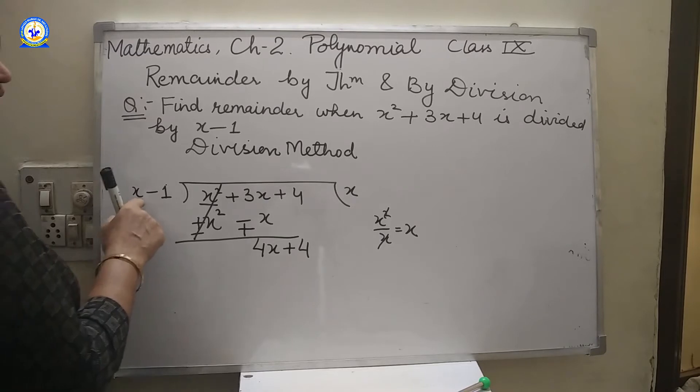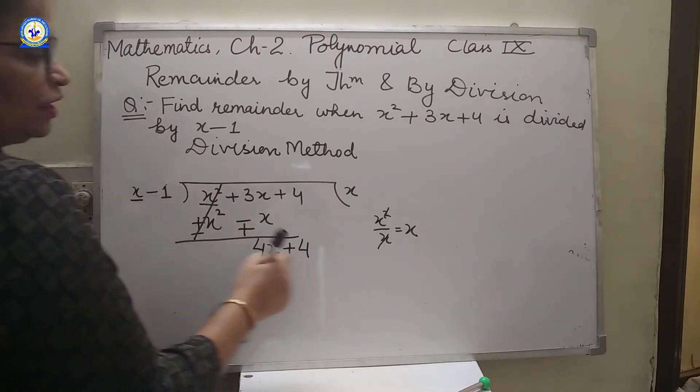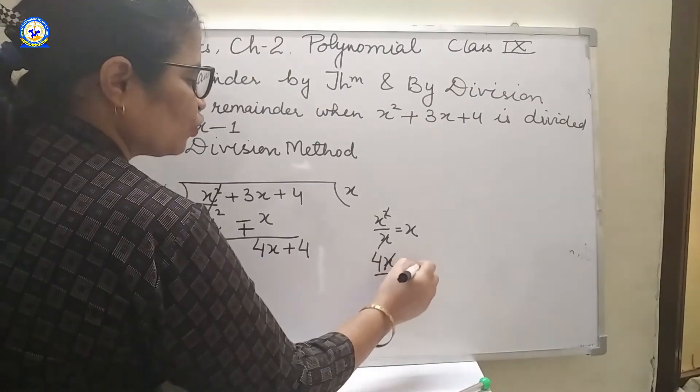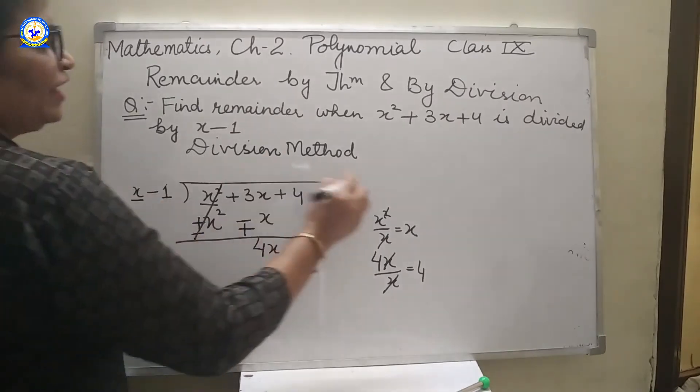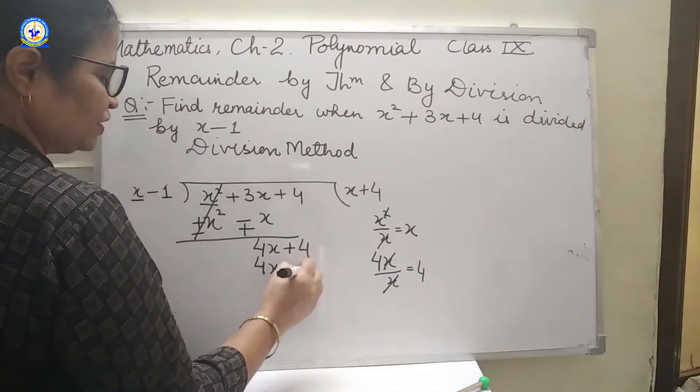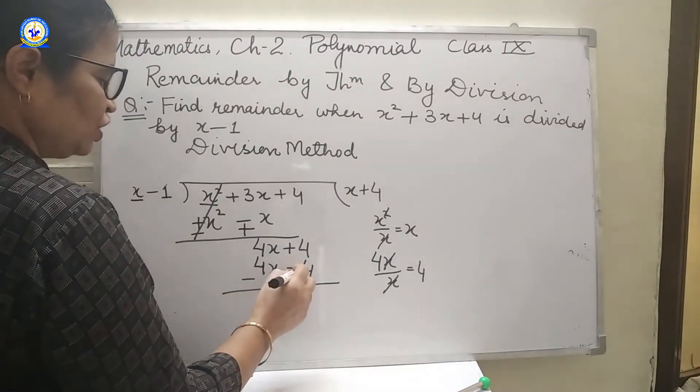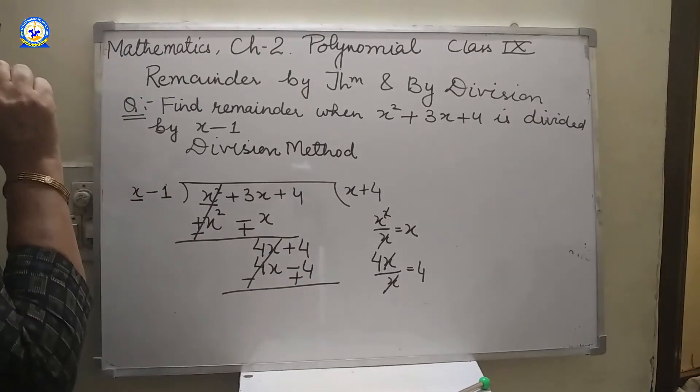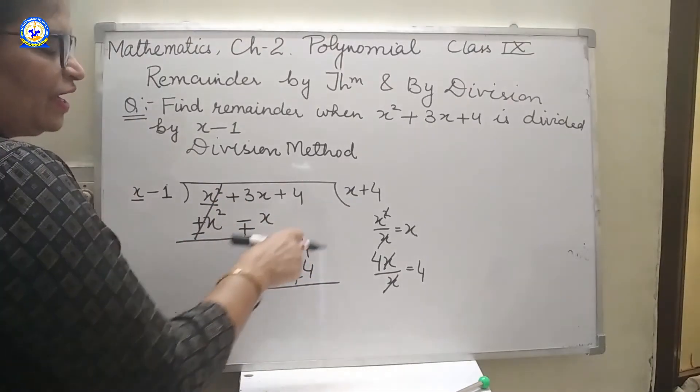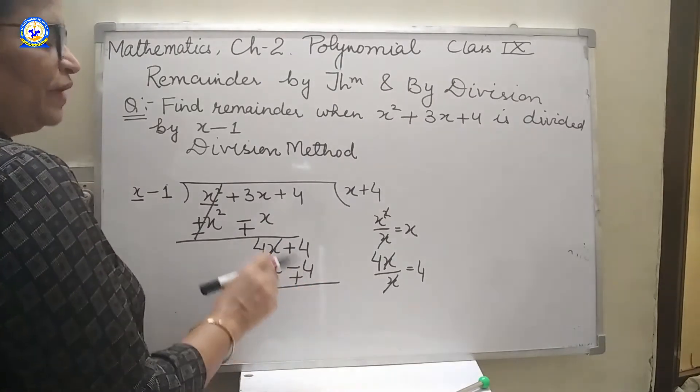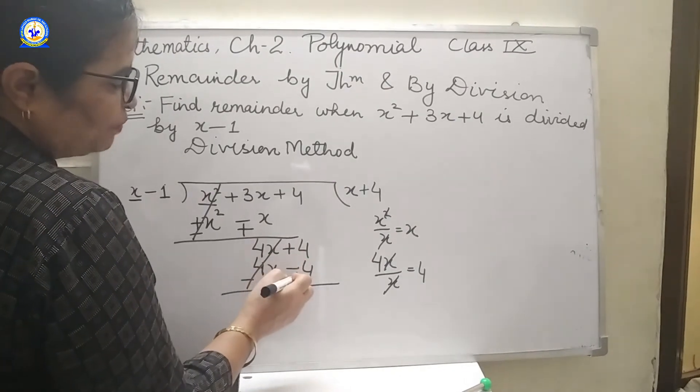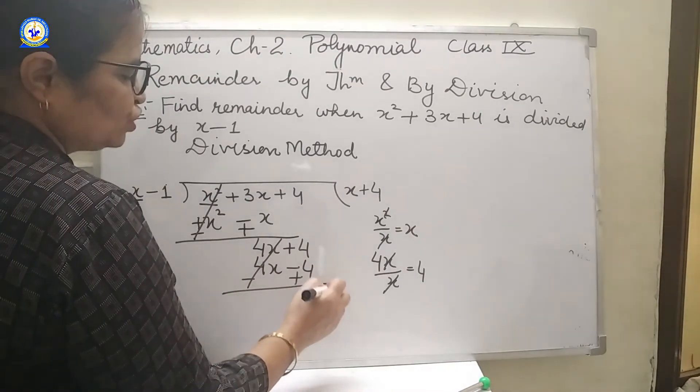Now x should be multiplied by which number to make it 4x? We will see by division 4. So x should be multiplied by 4 to get 4x. 4 into minus 1 is minus 4. Now again sign change. Kids, there is a general mistake by students. When they see the numbers are same, they hurriedly cancel it and write 0. But this should be taken care that if the signs are same, they are always added. So it is your remainder.